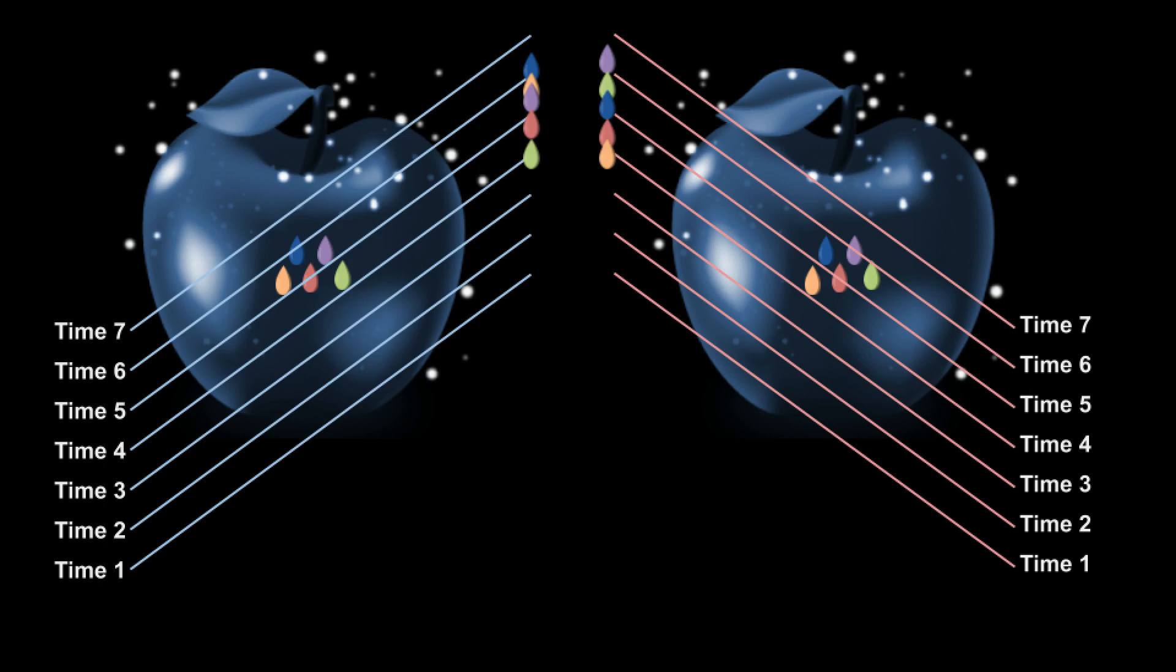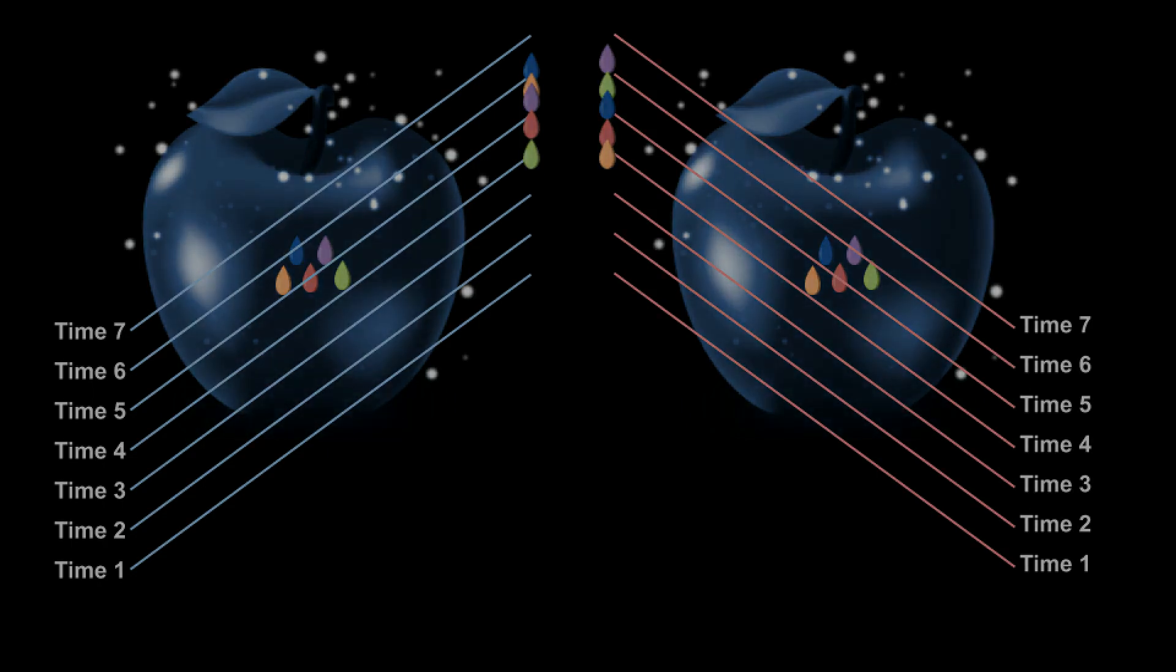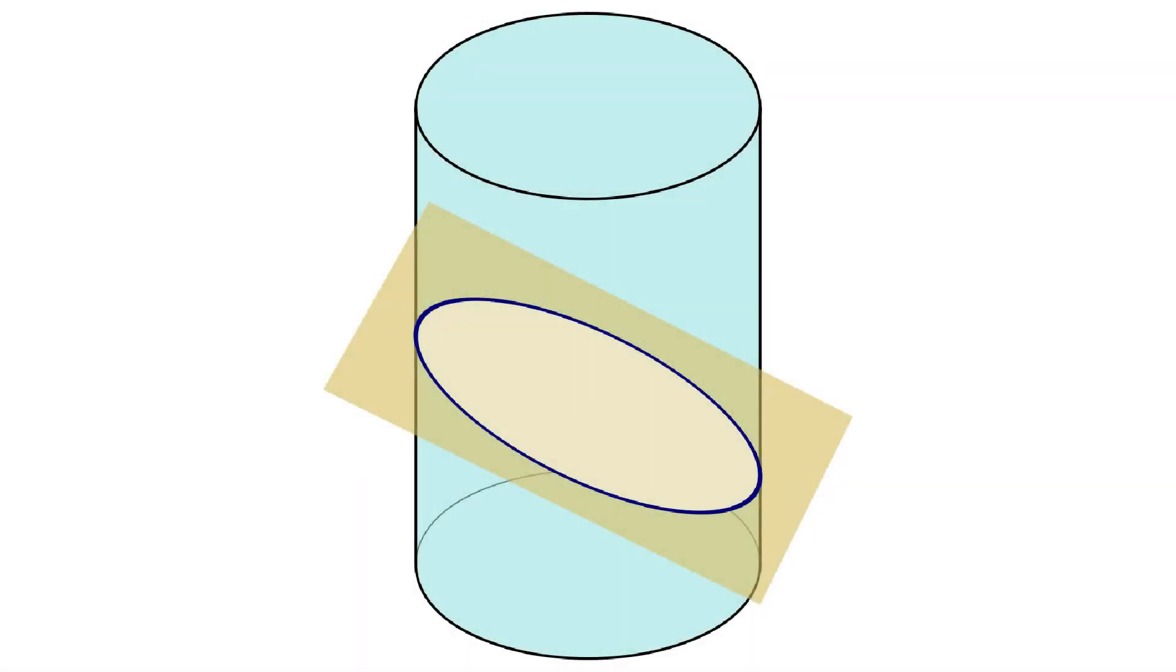In relativity, one's direction through spacetime determines this slicing angle. It explains why different observers, traveling at different speeds or directions through spacetime disagree on the order of events. What an observer takes to be their present time is equivalent to the 3D cross-section of one of these slices through 4D spacetime.